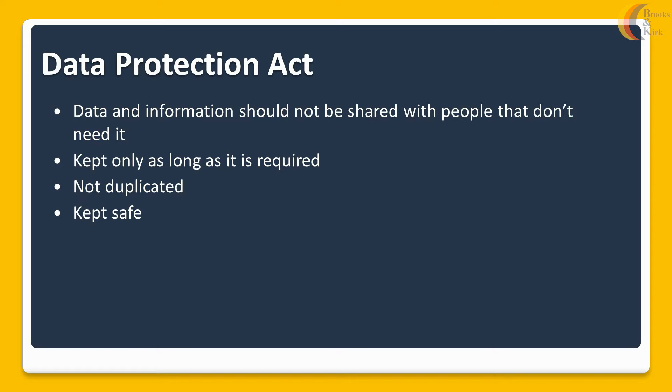Another part of the Data Protection Act says that we should not duplicate data. If we have the information once, it should not be replicated or stored elsewhere, as this can create more risk if it gets into the wrong hands. We should always keep data safe. If it is saved on a computer system we need to make sure it is encrypted, password protected, with the best virus protection and also firewalls to stop hackers getting into the system.